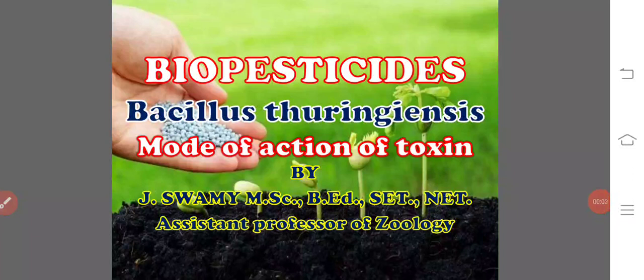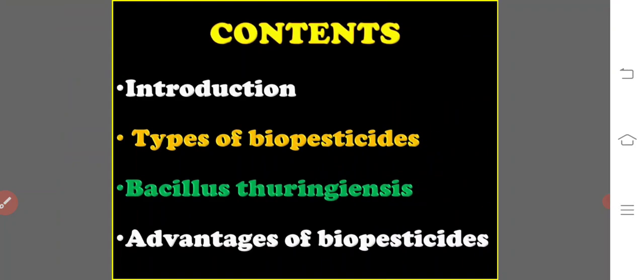Hi viewers. In this class we are going to discuss biopesticides such as Bacillus thuringiensis, commonly called BT, the mode of action of its toxin, toxin gene isolation and engineering of Bacillus thuringiensis. Under this topic we will see the introduction, types of biopesticides with special reference to Bacillus thuringiensis, and the advantages of biopesticides.